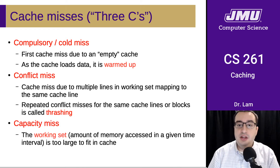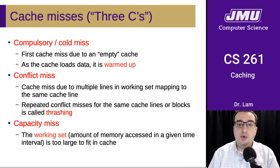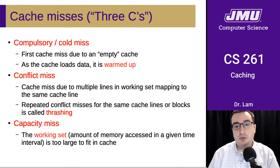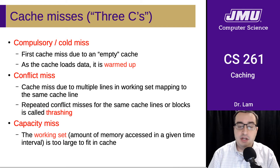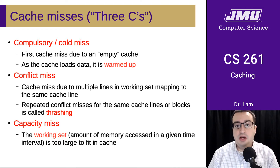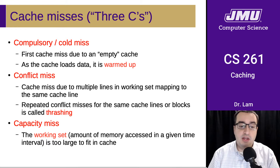Finally, there is a capacity miss, which refers to the situation where you have too many things that you're trying to work with at any given time and you just can't fit them all into cache. So you're going to have misses simply because you can't get everything into the cache.